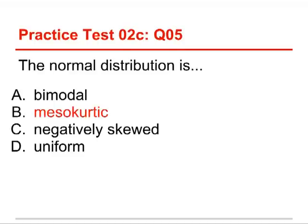It's not bimodal because it has one mode. It's unimodal. It's not negatively skewed because it's symmetrical. And it's not uniform. Uniform is totally flat. A normal distribution is mesocurtic. Of these four choices, that's the one that's appropriate.